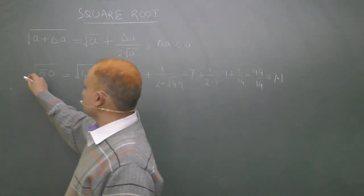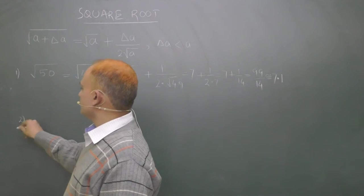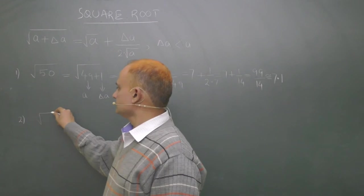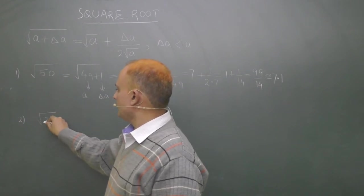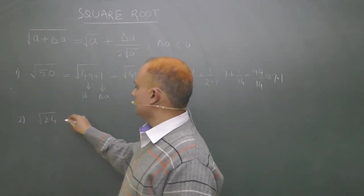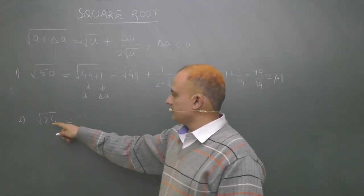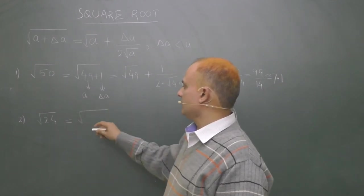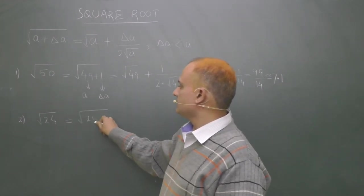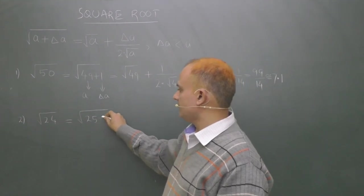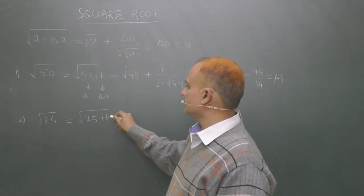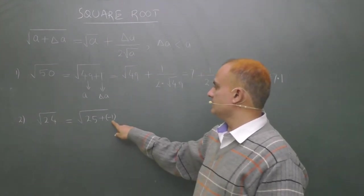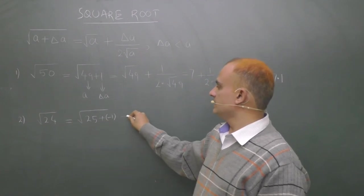Let us see another example. Suppose you wish to find square root of 24. You know a number which is very close to this 24, which is a perfect square? The number is 25. You write 25 plus minus 1. Now see, your delta is what? Delta a is minus 1 and a is 25.